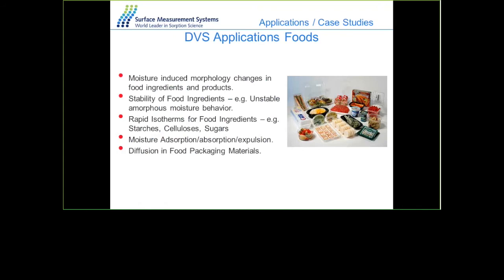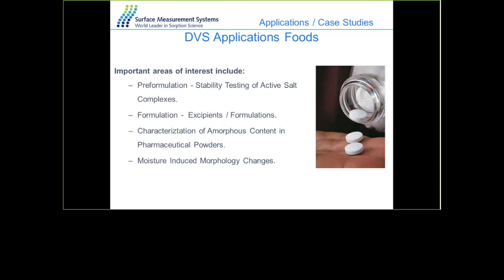In terms of food material applications, moisture-induced morphology changes in food ingredients and products is an important area, along with stability and shelf life, rapid isotherms compared to old techniques like the jar method, moisture adsorption and drying effects for food materials, and diffusion into food packaging materials.